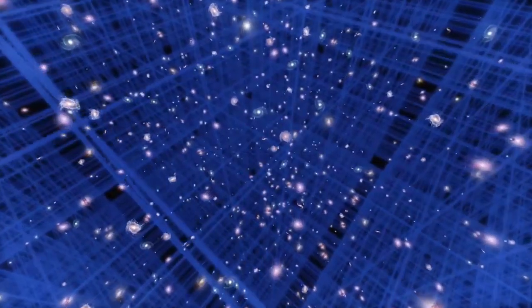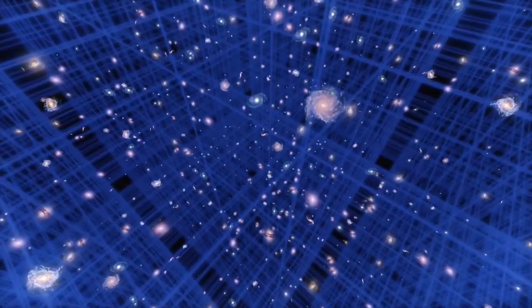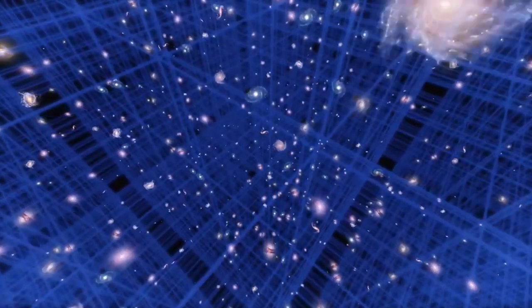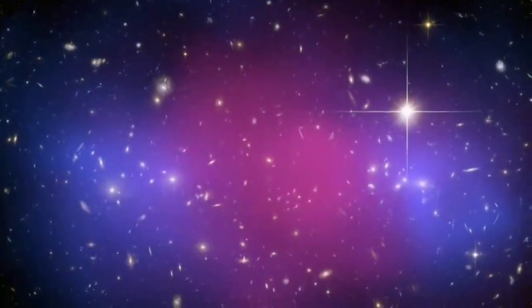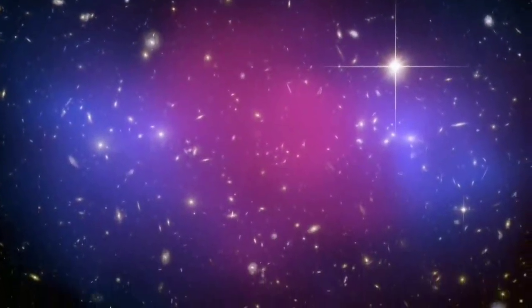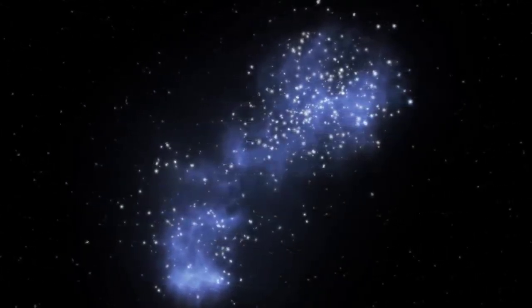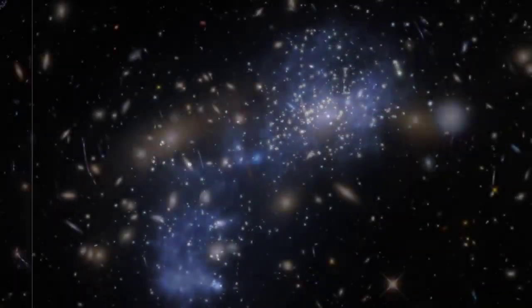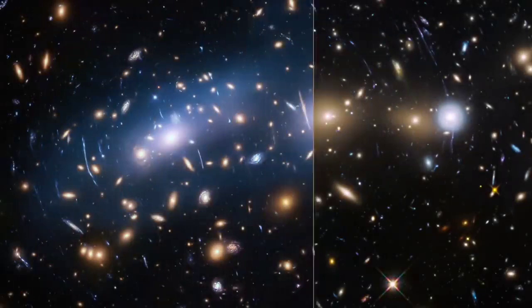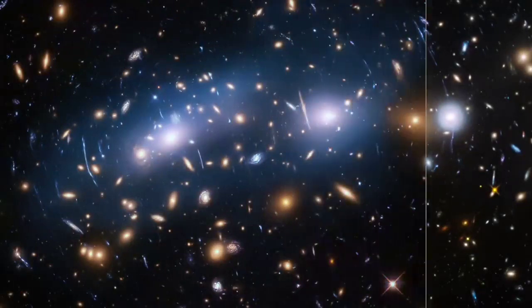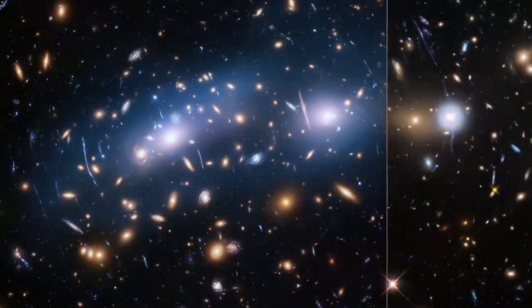By observing how dark energy behaves over time, astronomers hope to gain a better understanding of what it is and how it might affect the future of the cosmos. The telescope also carried out surveys and developed new methods to look for clues about the mysterious dark matter. Astronomers used Hubble to create a map of everyday visible matter from which they could trace the large-scale distribution of dark matter by studying how its gravitational presence distorted light in the images.